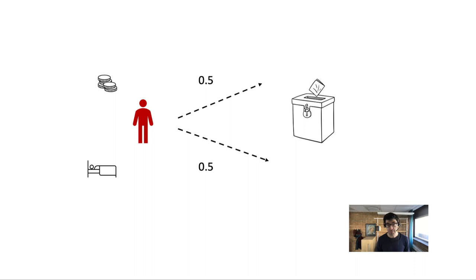The disappearing agent objection says the thief cannot possibly be free because the thief cannot settle what decision he makes. What decision the thief makes ultimately depends on chance — 50% he will steal, 50% he won't — and how these chances play out is not up to the agent. In this sense, the agent plays no decisive role in the decision making; he cannot settle which decision is made. That's at the heart of the disappearing agent objection.